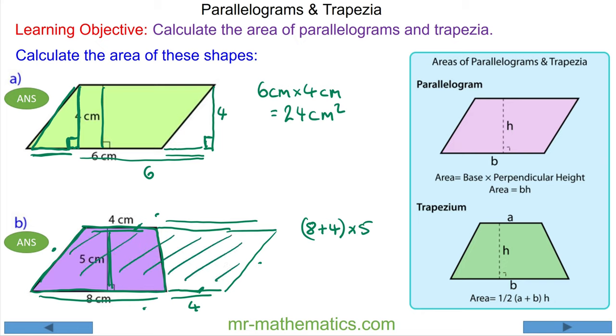We don't want the entire area, we only want half of that, so we're going to divide it by 2. So it is 8 plus 4, which is 12, times 5 divided by 2. 12 times 5 is 60 divided by 2.